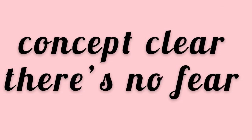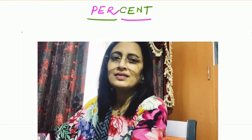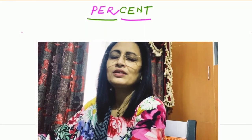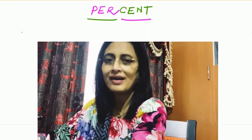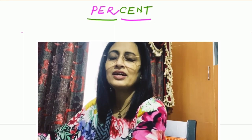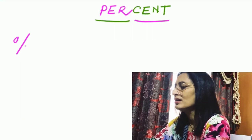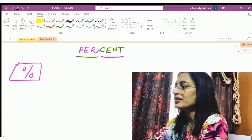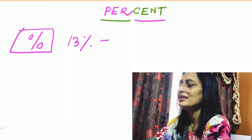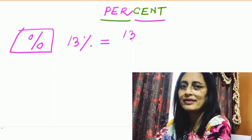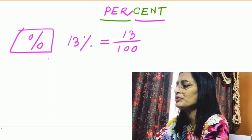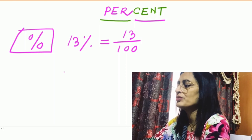But before that, concept clear, there is no fear. Okay, let's get started. My dear children, the word percent simply means per 100, and this word is derived from the Latin word percentum. It is denoted by this symbol, the percent sign. If you write 13 percent, then this is equal to 13 divided by 100, and 2 percent similarly you can write like 2 per 100, that means 2 divided by 100.